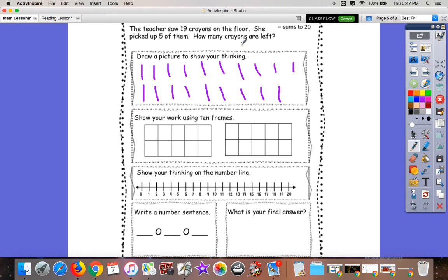How many crayons did the teacher pick up? Five. So let's cross off five. 1, 2, 3, 4, 5. 14 crayons are still on the floor.